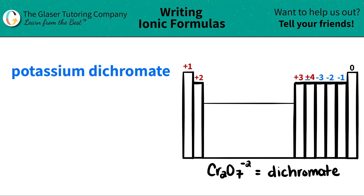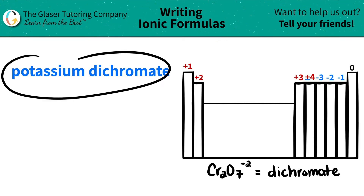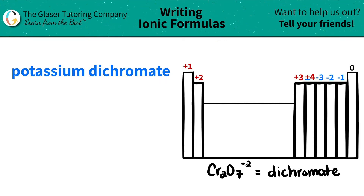Today we are going to write the formula for the ionic compound potassium dichromate. So let's work from left to right.